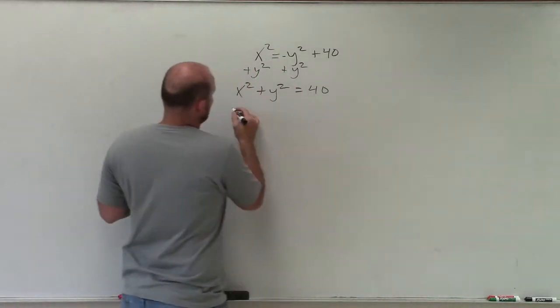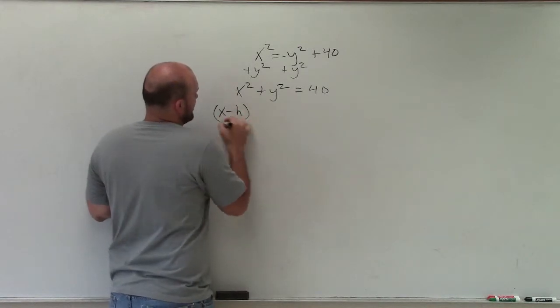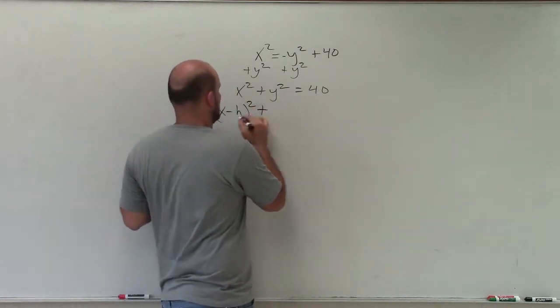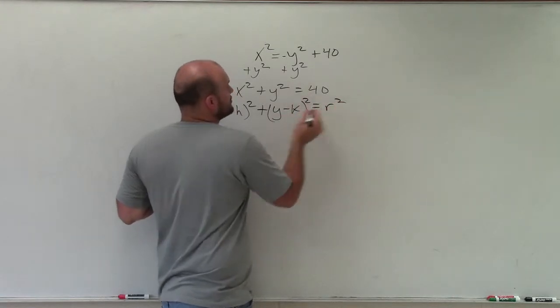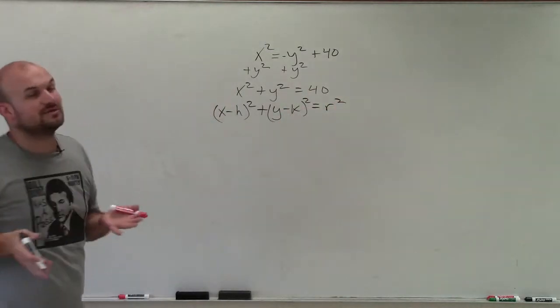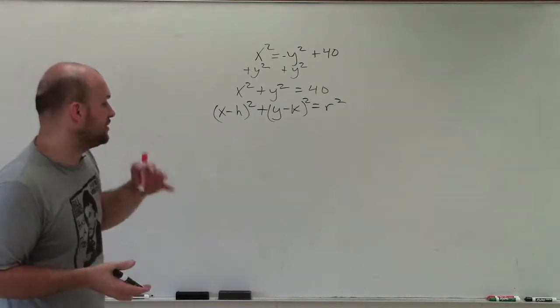So therefore, the general equation for a circle that we've discussed is (x minus h)² plus (y minus k)² equals r squared. So I can leave it in this format. I just now need to identify what my h and k are, as well as my r.